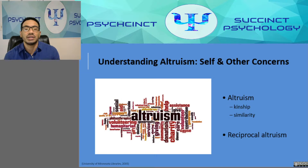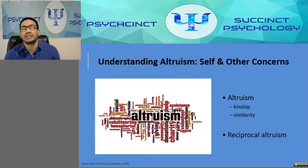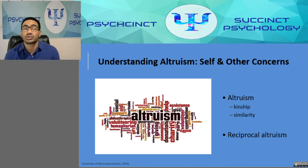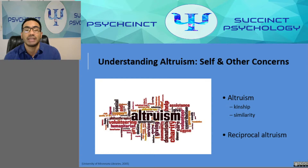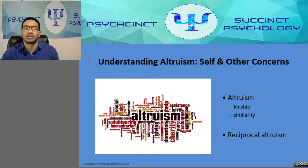Though helping others can be costly to individuals, altruism has a clear benefit for the group as a whole. In an evolutionary sense, the survival of the individual is less important than the survival of one's genes. If a behavior like altruism enhances reproductive success and helps the species prosper, it increases fitness and becomes part of human nature. We should therefore be particularly likely to care for and help our relatives — and research confirms this.